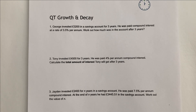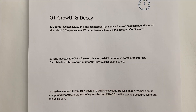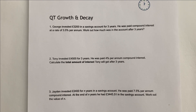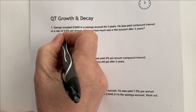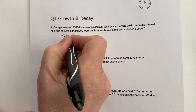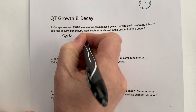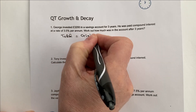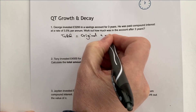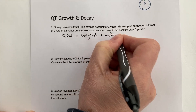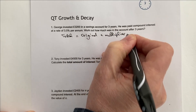The first one: George invested $3,200 in a savings account for three years. He's paid compound interest at three and a half percent per annum. How much is in his account after three years? I would always advocate that you write the formula down, and with all of these I'm going to be doing exactly the same. The total equals original times multiplier to the power of N.